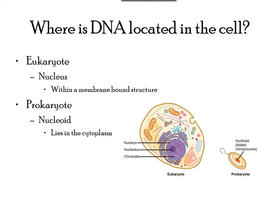Now let's see how DNA is arranged in the cell. In prokaryotic cells, the DNA molecule is packaged in a circular chromosome and attached to the membrane on one side of the cell. The region that contains the folded chromosome is also called the nucleoid. On the other hand, in eukaryotes, the chromosomes are contained within a well-defined nucleus, and eukaryotic chromosomes are linear and condensed within the nucleus.